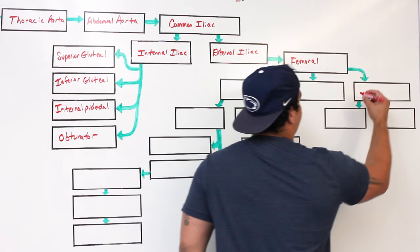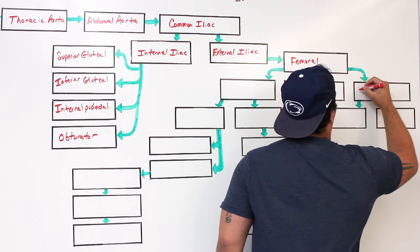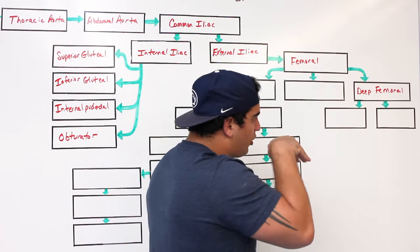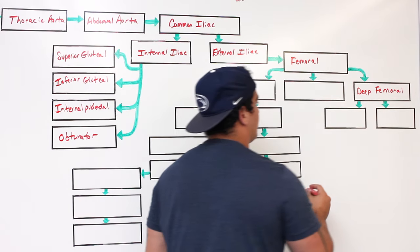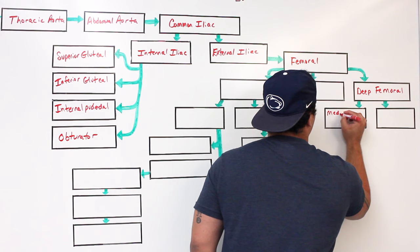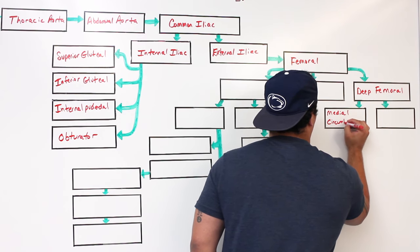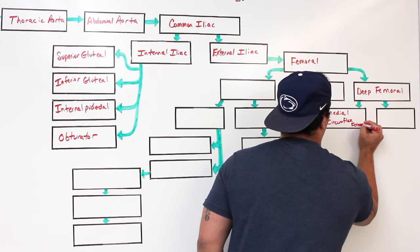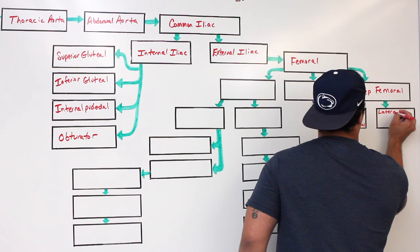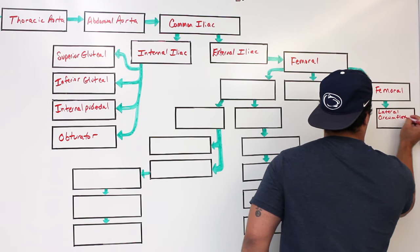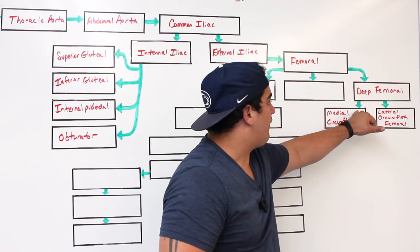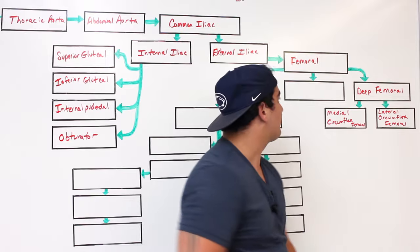The femoral artery gives off three branches. One branch goes really deep within the thigh — that's called the deep femoral artery. The deep femoral gives off two important branches: one going to the medial side of the thigh called the medial circumflex femoral artery, and one to the lateral side called the lateral circumflex femoral artery.